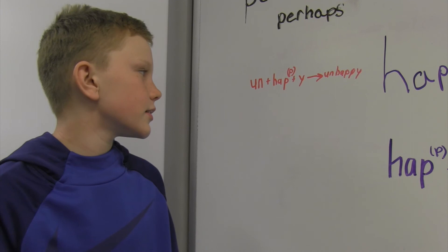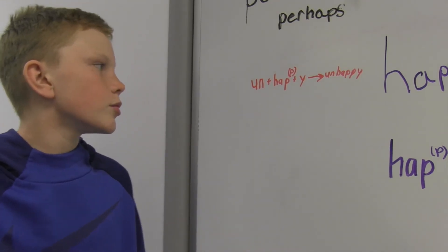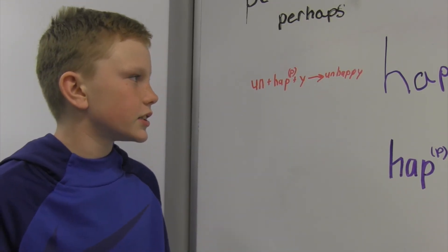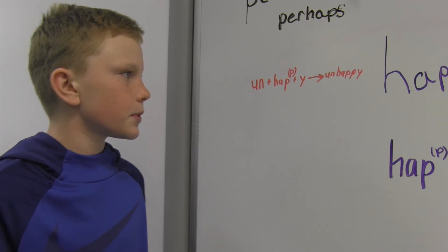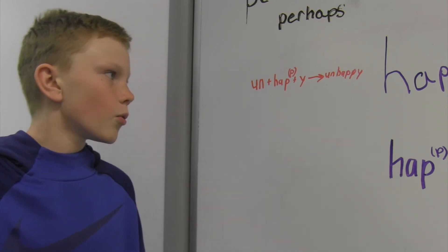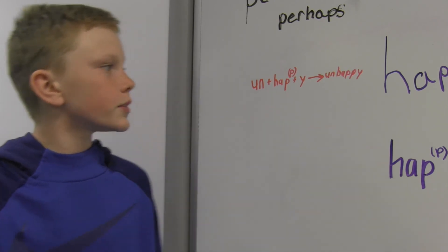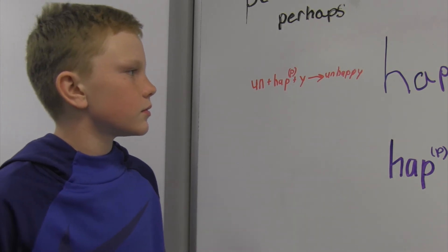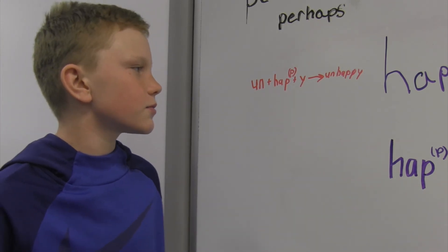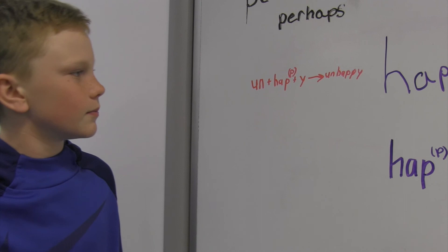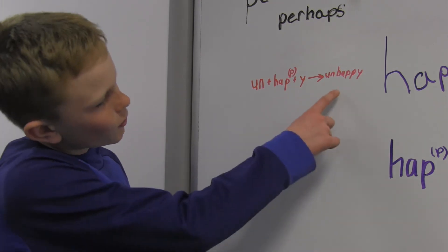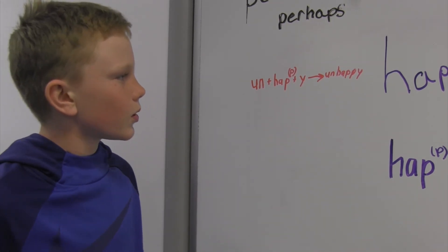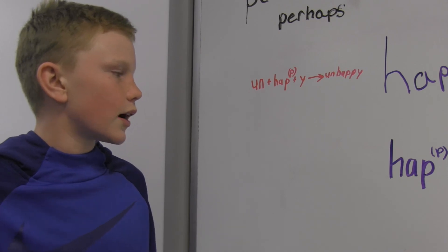U-N plus H-A-P plus Y is rewritten as U-N-H-A-P double the P-Y. We double the P because the suffix begins with a vowel. It's a one syllable base and there's one consonant and one vowel.